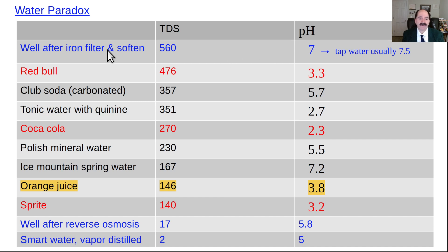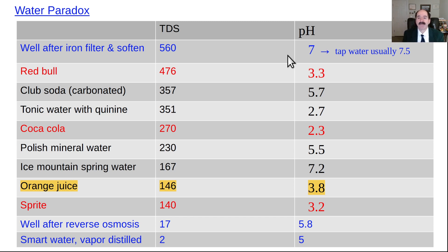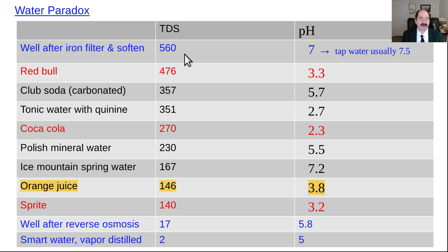The blue represents the water we actually worked with. Here was well water after an iron filter and a softener — we had a TDS of 560 and a pH of about 7, right in the middle of the pH scale between 1 and 14. The higher the number, the more basic or alkaline; the lower the number, the more acidic. Tap water usually has a pH in the ballpark of 7.5, and TDS will be somewhere around 500 quite often.